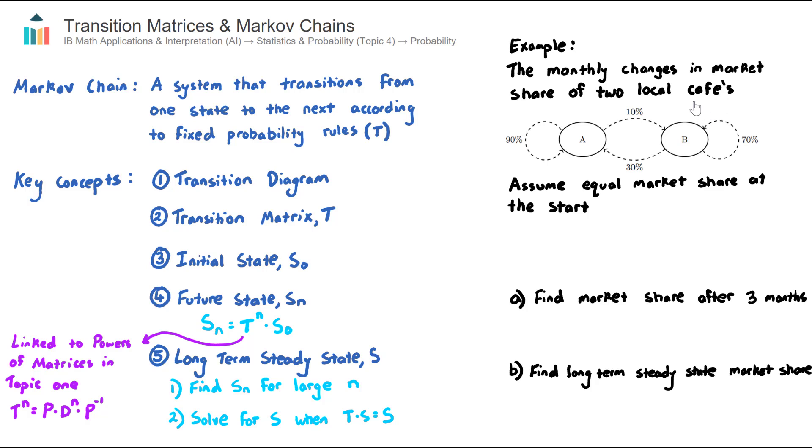In this example here, we have the monthly changes in market share of two local cafes, and those changes are described by this diagram here, and this diagram is the first key concept. This is called a transition diagram. Let's look at cafe A. On a monthly basis, they retain 90% of their customers to cafe B, but they also gain 30% of cafe B's current customers. Let's now look at cafe B. Likewise, on a monthly basis, they retain 70% of their current customers, they lose 30% to A, but they gain 10% of A's current customers for that next month.